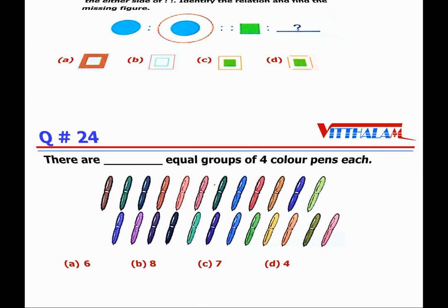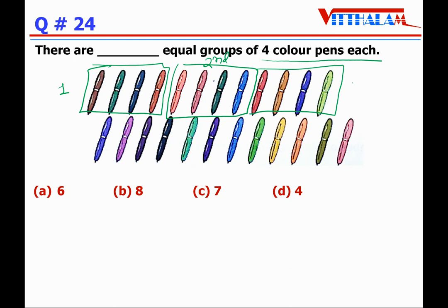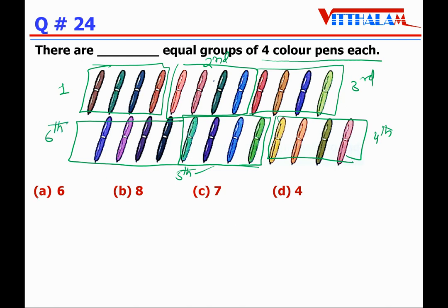Next, Question 24: there are blank equal groups of four color pens each. Let's count the groups — first group, second group with different colors, third group, fourth group, fifth group, and sixth group. That means six groups will be formed. So the answer is A — there are six equal groups of four color pens each.